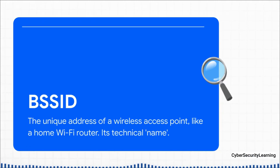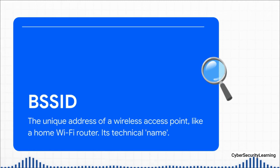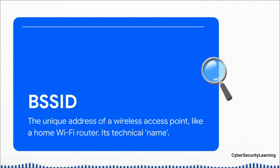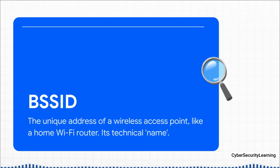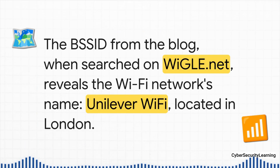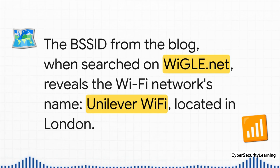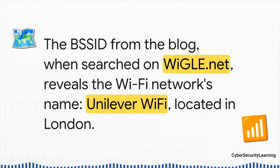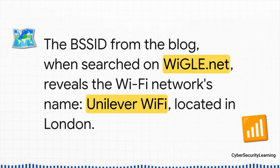But his blog had an even juicier, more technical clue. He posted something called a BSSID. Every single Wi-Fi router has a unique serial number — kind of like a MAC address — that's its BSSID. You see the friendly name like "My Awesome Wi-Fi," but your device sees this long string of letters and numbers. For some reason, he just posted it on his blog. It turns out there are public databases, like Wigle.net, that have mapped millions of Wi-Fi networks worldwide. We plug that BSSID into the database and get a match: the public name for that network is "Unilever Wi-Fi" and its last known location was London. That basically confirms he lives in London and very likely works at Unilever.